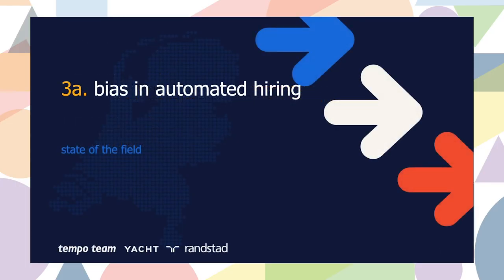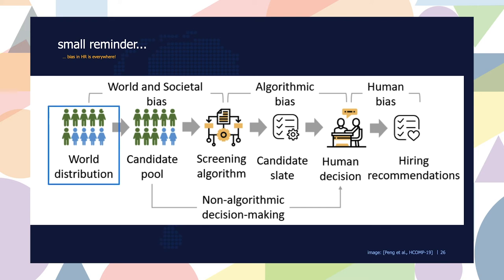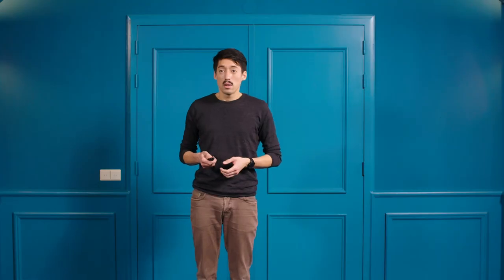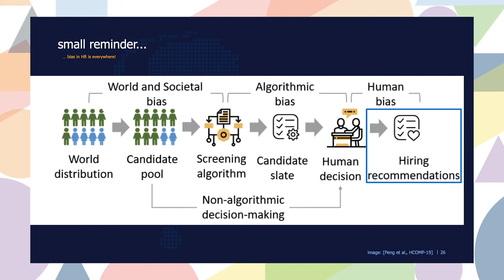Now I'd like to dive into the bigger context. What is bias in automated hiring? This is a reminder: bias in HR is everywhere. There are many different sources of bias. Starting from the left: the world is distributed in a certain way that may or may not be fair. The candidate pool is always a non-random subset of the world population and may exhibit its own bias. Then there's a screening algorithm — a potential black box — producing a candidate slate that may also exhibit bias. Then there's a human decision maker, also somewhat a black box, producing recommendations that again are a subset of the previous candidate slate and may exhibit yet different bias.